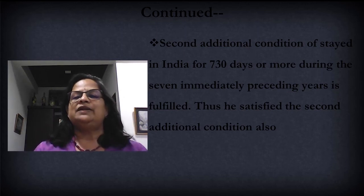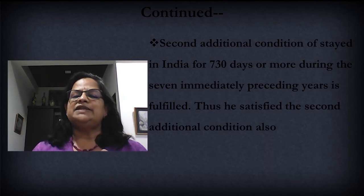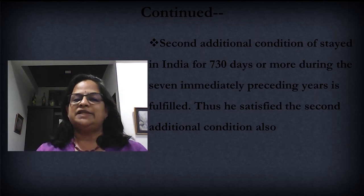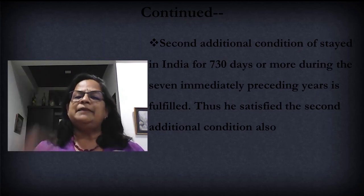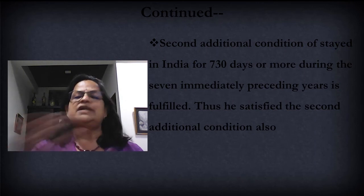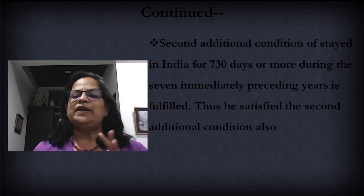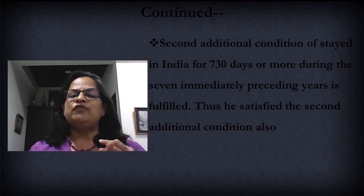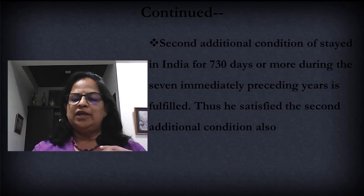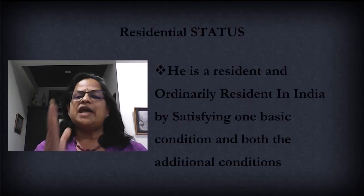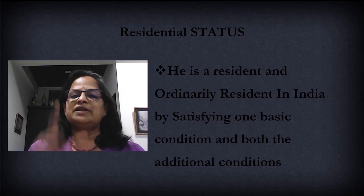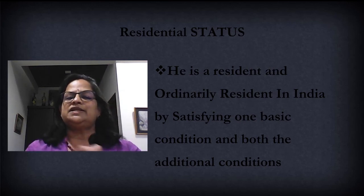The second additional condition is also satisfied — whether he stayed in India for 730 days or more during the seven immediately preceding previous years. When we calculated the four immediately preceding previous years, this condition was already satisfied. So he has satisfied the second additional condition as well. He has satisfied one basic condition and both additional conditions, therefore he is a resident and ordinarily resident in India. This is very important — resident and ordinarily resident.